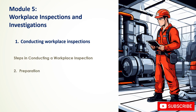Preparation involves reviewing previous inspection reports and accident data, gathering necessary equipment such as measuring devices and cameras, and informing employees. During inspection: observe work activities and conditions, identify hazards and potential risks, take photographs or measurements, interview employees about safety concerns, and check compliance with safety procedures. Reporting involves documenting findings and recommendations, prioritizing hazards by severity and likelihood, assigning responsibilities for corrective actions, and communicating findings to management and employees. Follow-up verifies that corrective actions have been implemented and schedules follow-up inspections.